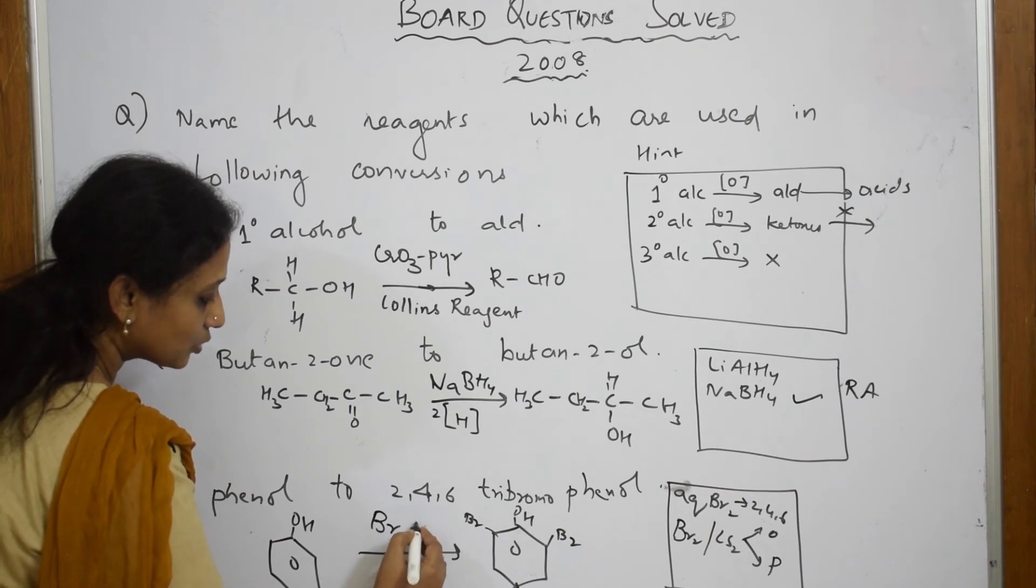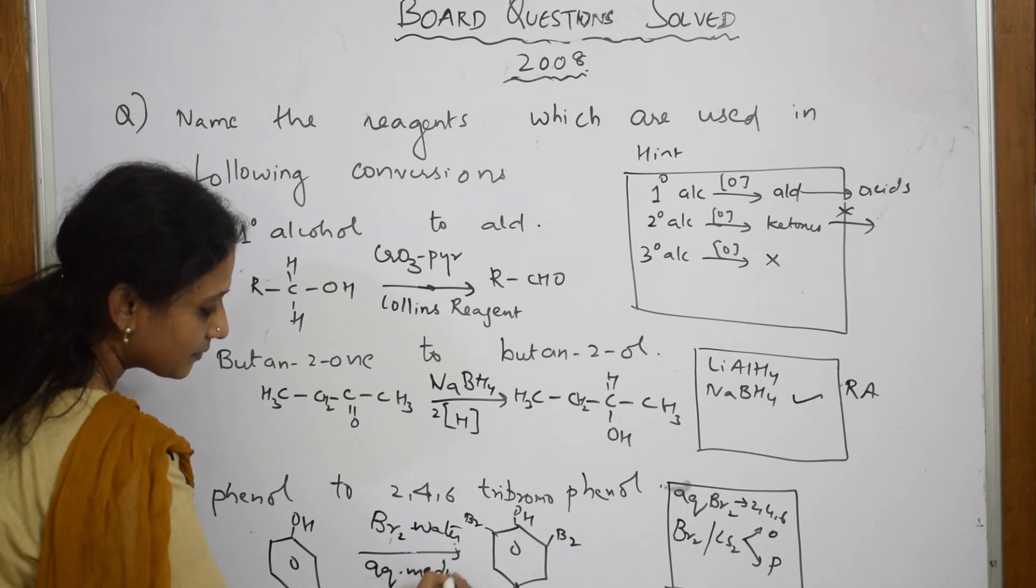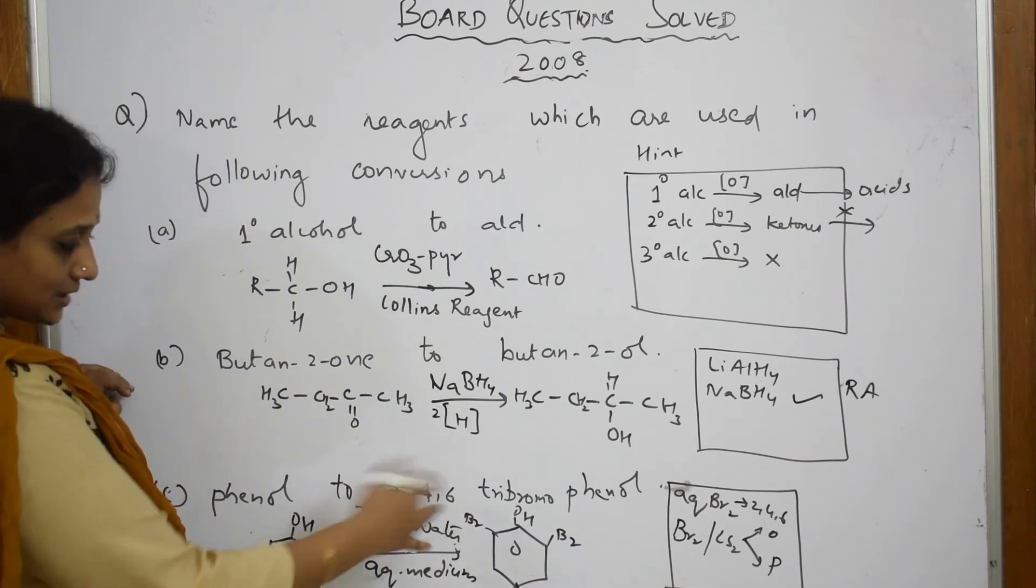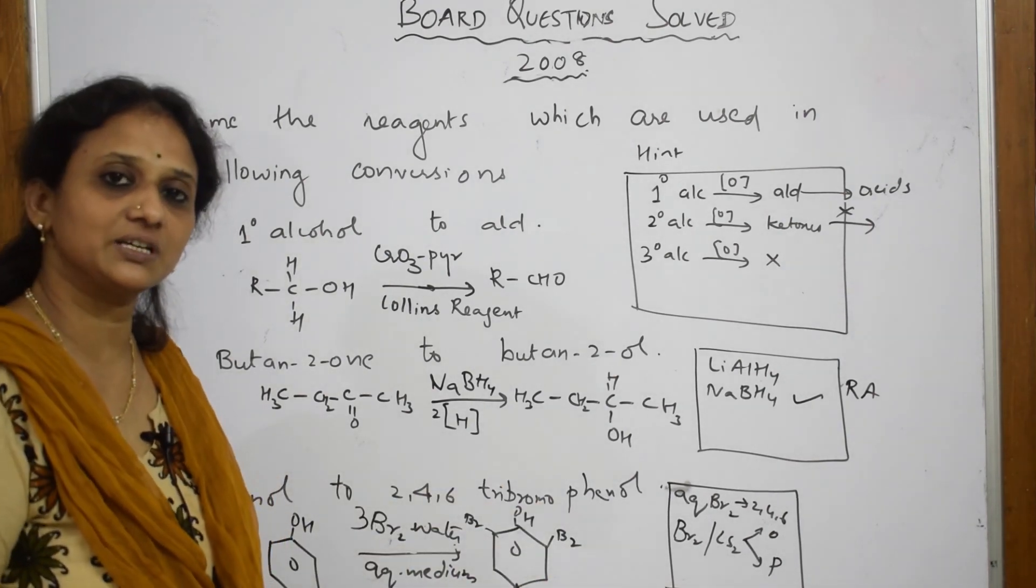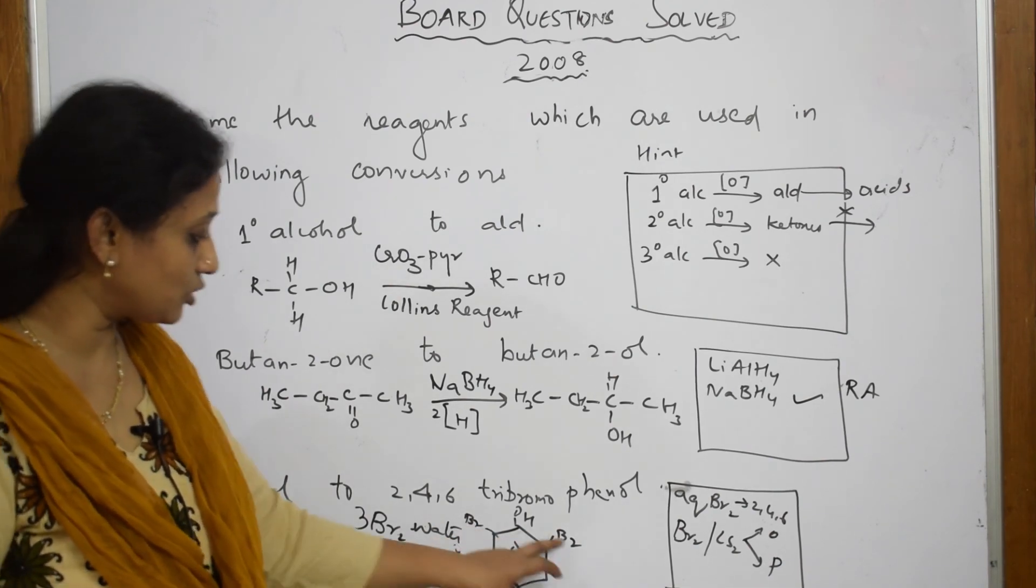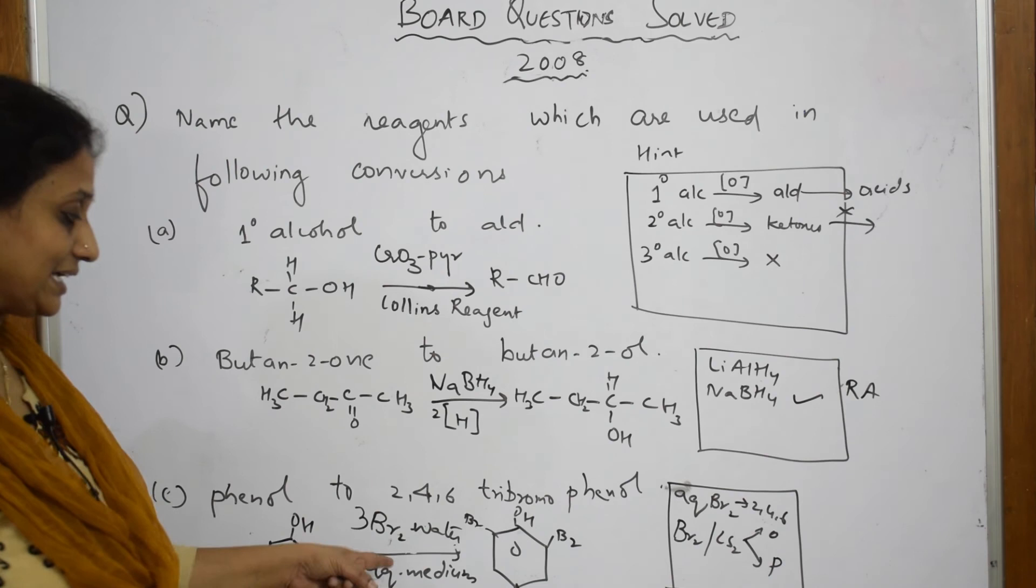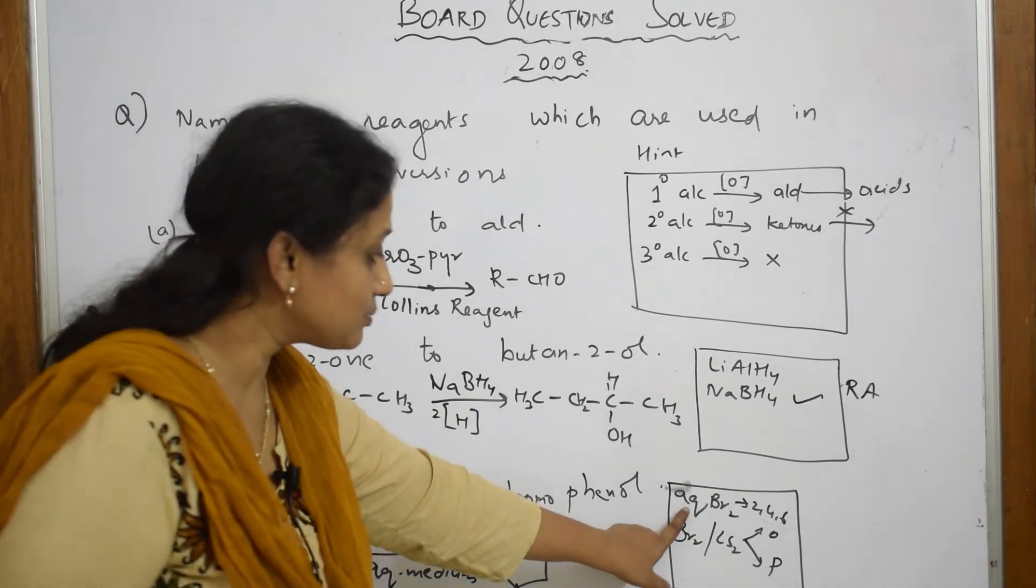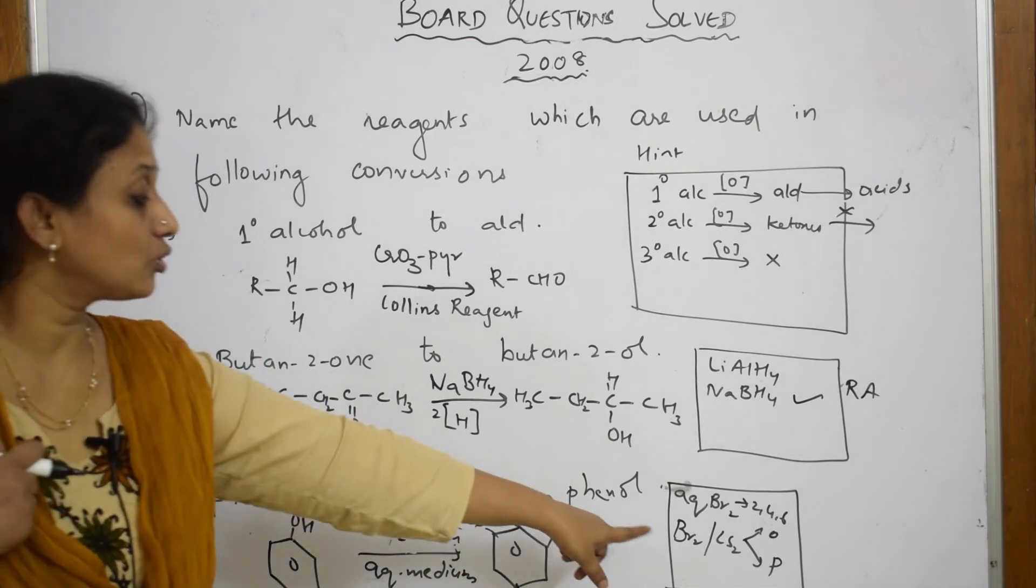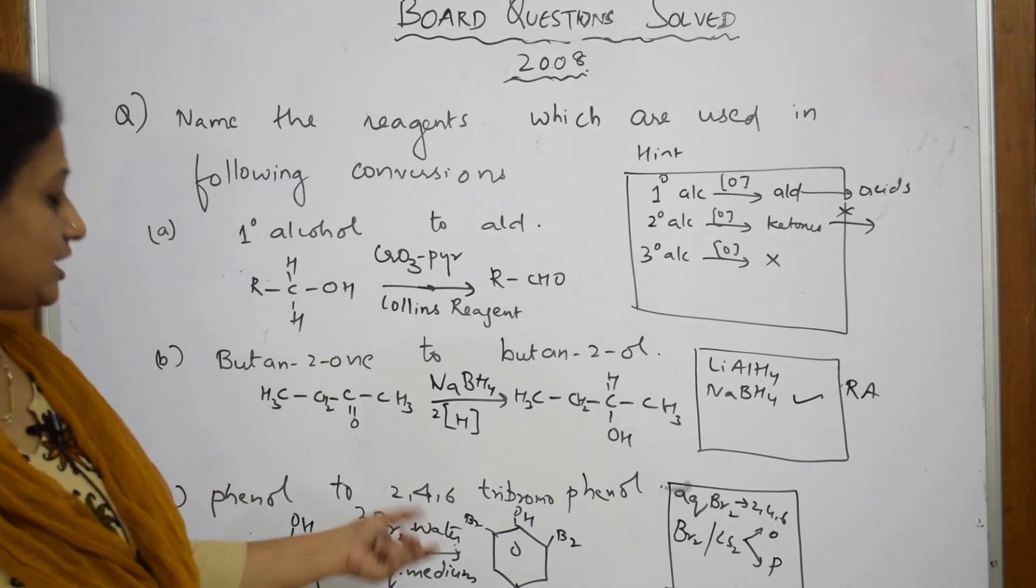What did we get? We got 2,4,6-tribromophenol product. So what do I require? I require bromine water or aqueous medium. How many bromines did I take? I took three bromines. What do I get? I get 3Br2 - 6 means HBr extra. HBr is out because you have utilized this H here. Three bromines have joined here and the leftover three bromines with these three hydrogens as HBr. So aqueous bromine will give me 2,4,6 product. Bromine in CS2 will give me ortho and para. Here they've not asked me ortho and para - they've already given me 2,4,6-tribromo, so use bromine water.